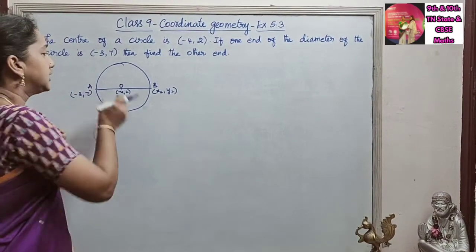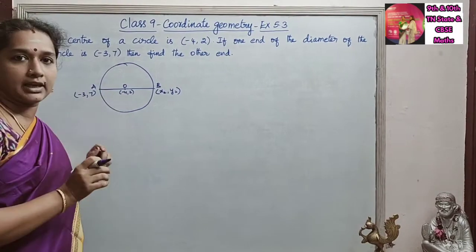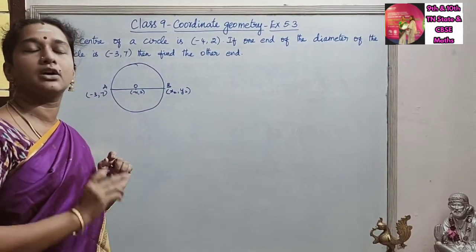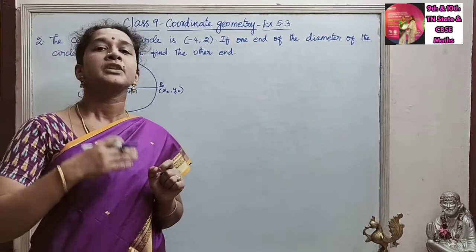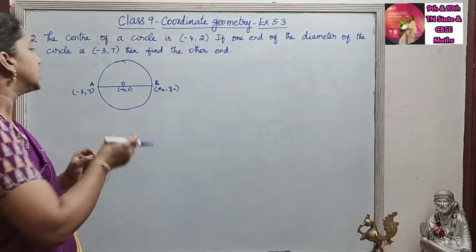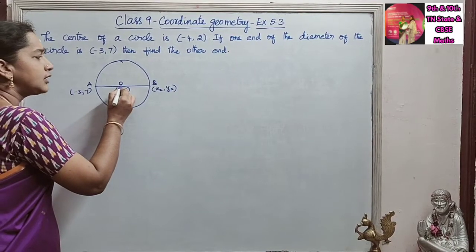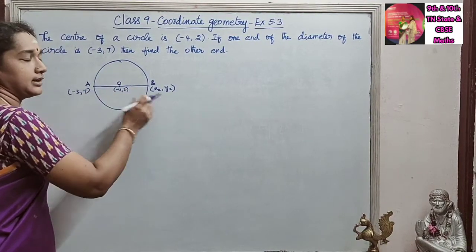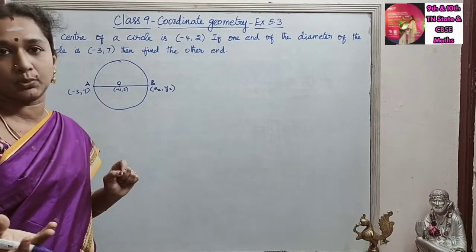We know that the radius of the circle is equal, so OA is equal to OB. The length of OB will be equal. So using distance formula, sorry, using midpoint formula we can find, we can equate this (-4,2) to that one.